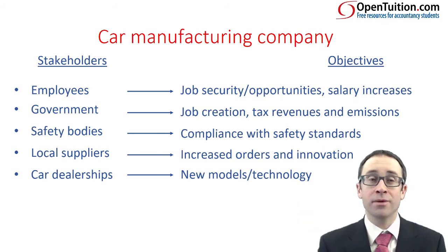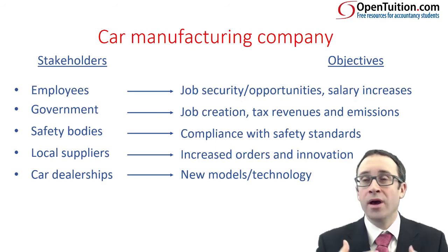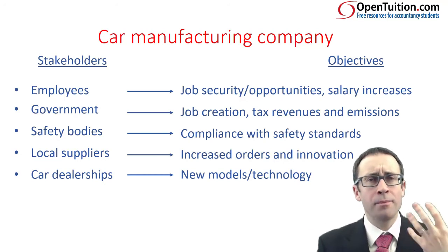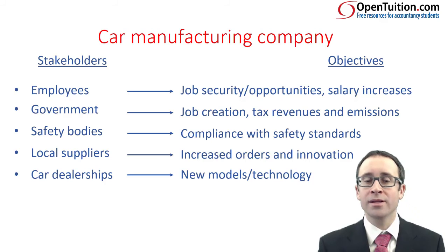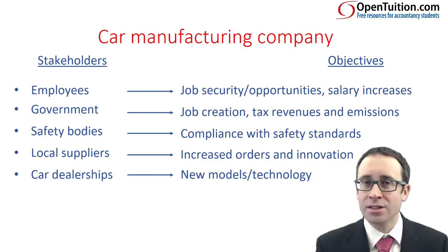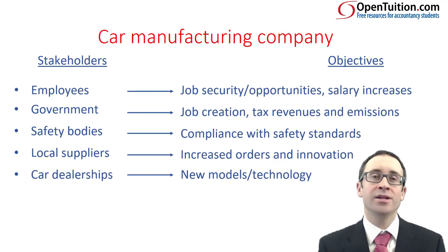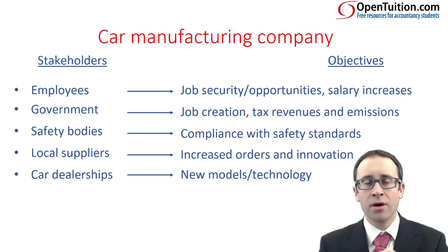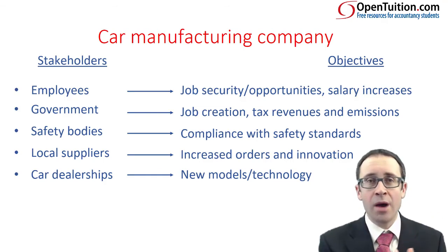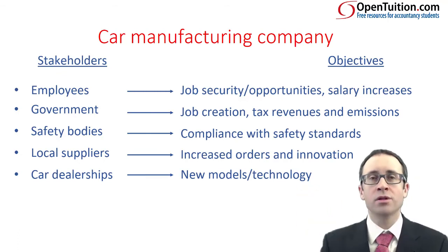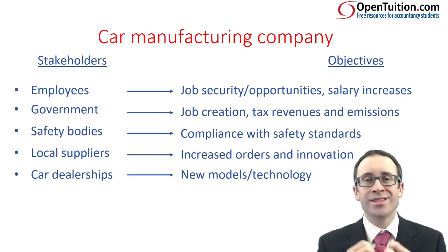That's just looking at an example for a car manufacturing company. Feel free to use any business you want — for example, an airline business, where you can think about your customers being the holiday makers or businesspeople who fly on the planes, and your suppliers being engine suppliers like Rolls-Royce, and how that needs to be considered when setting your financial and non-financial objectives. We haven't yet touched upon the financial and non-financial objectives just yet, because first we need to think about stakeholders and what their objectives are. What we're going to look at next is the different types of entity that we could look at within any exam question.